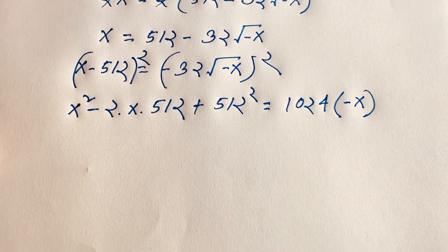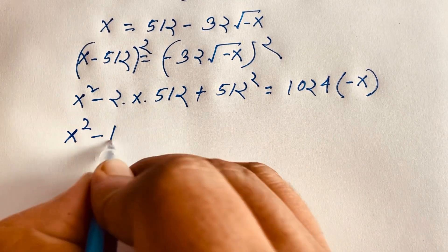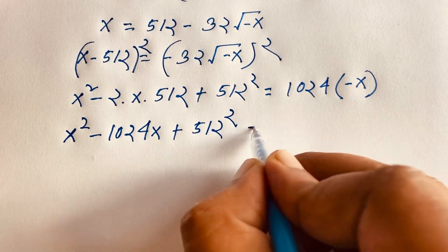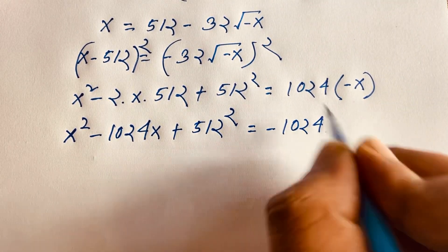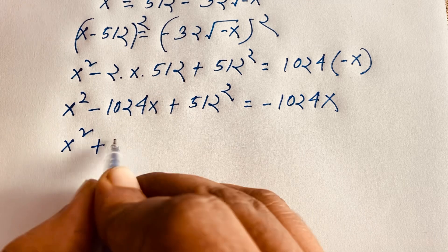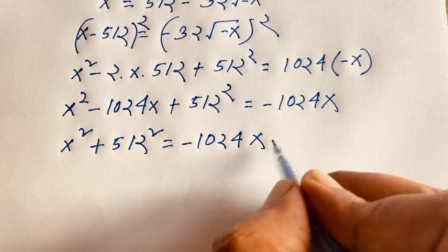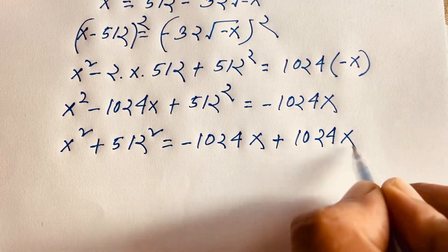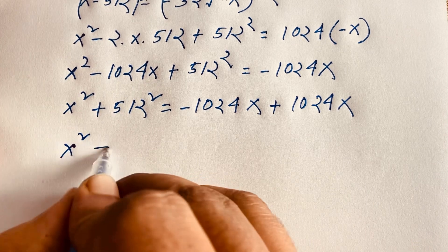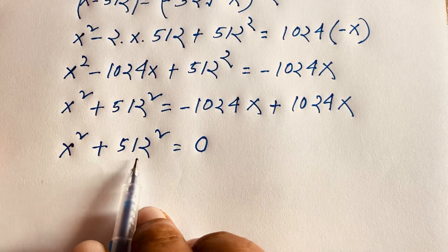So we have x squared minus 1024x plus 512 squared is equal to negative 1024x. If I move positive 1024x to this side, the negative 1024x and positive 1024x cancel out, because one is positive and one is negative. So we get x squared plus 512 squared is equal to 0.